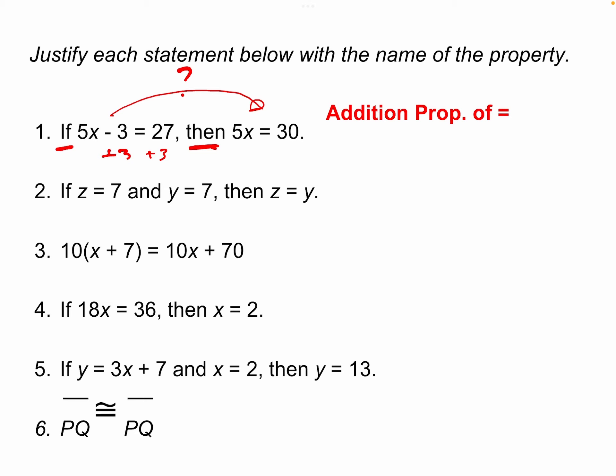Let's look at number two. Again, we have a conditional statement — if and then. If z equals 7 and y equals 7, then z equals y. What do we do to move from the hypothesis to the conclusion? We know z is 7 and y is 7, so they must equal each other. This is a perfect example of the transitive property, where if one thing equals the same thing as another, those two things must be equal to each other. We'll see that show up later during a couple of proofs.